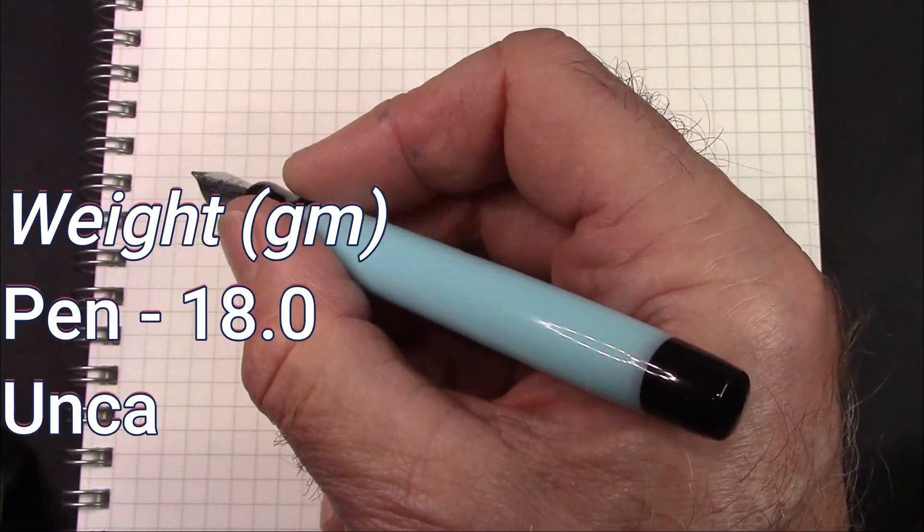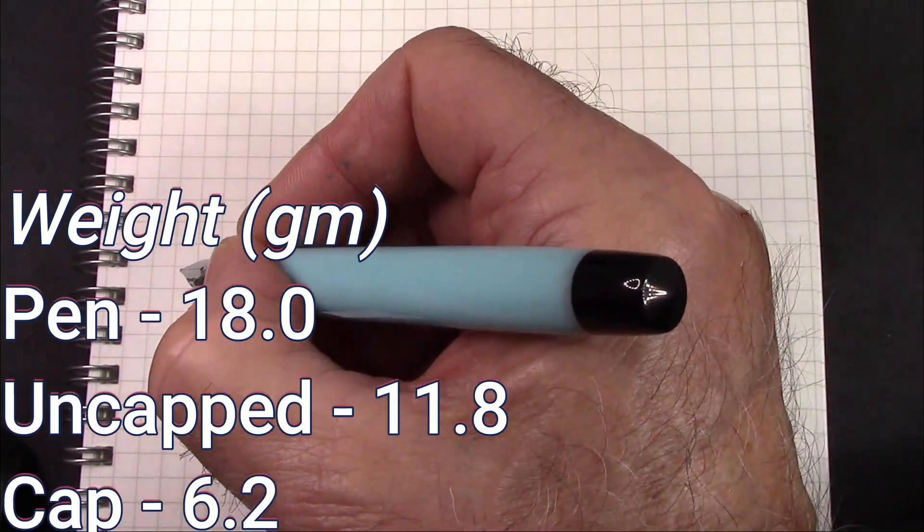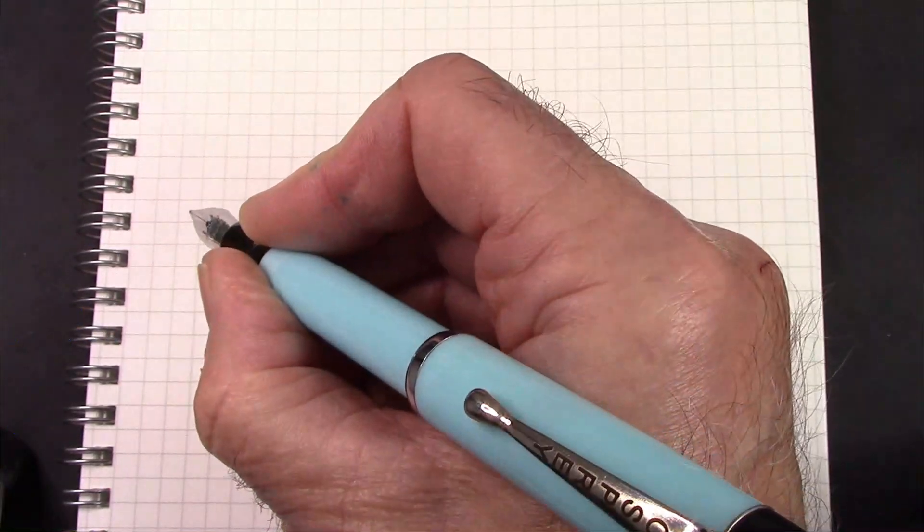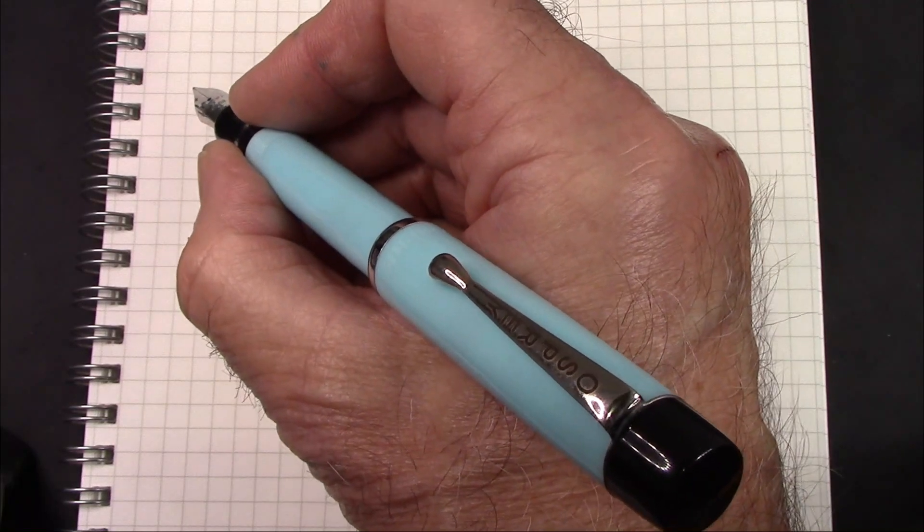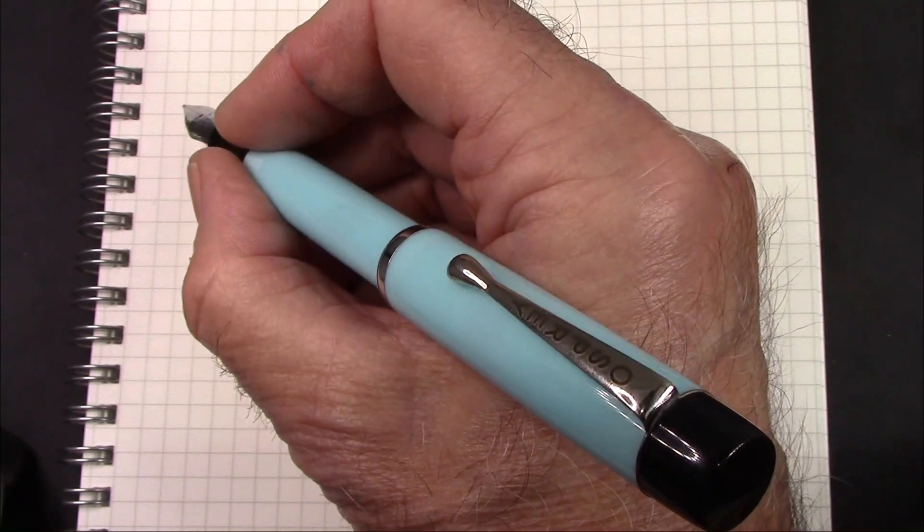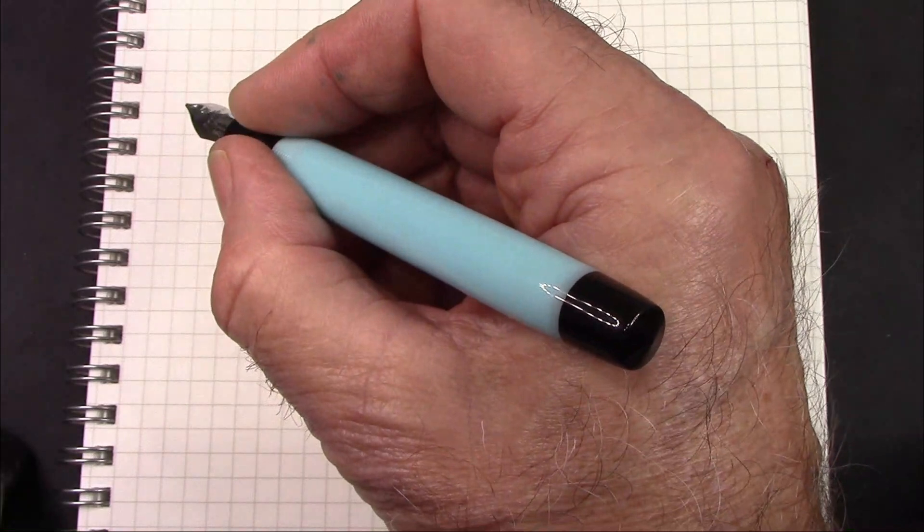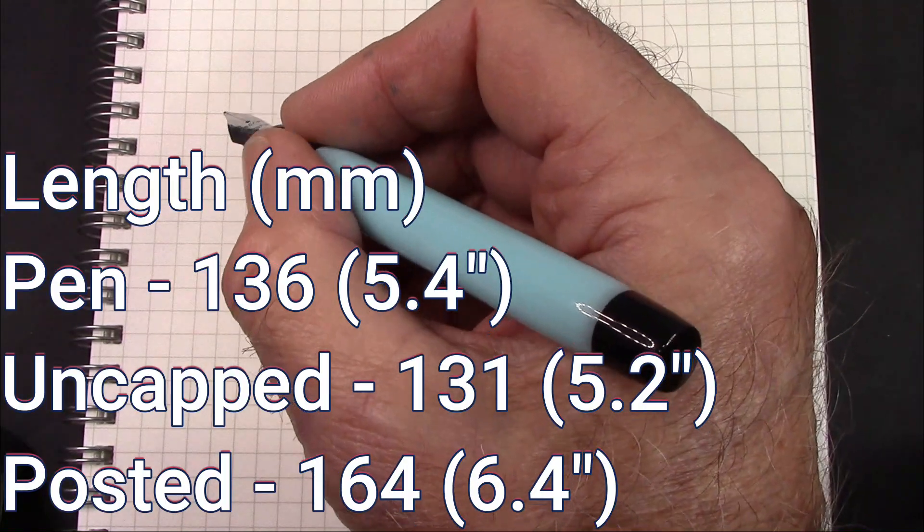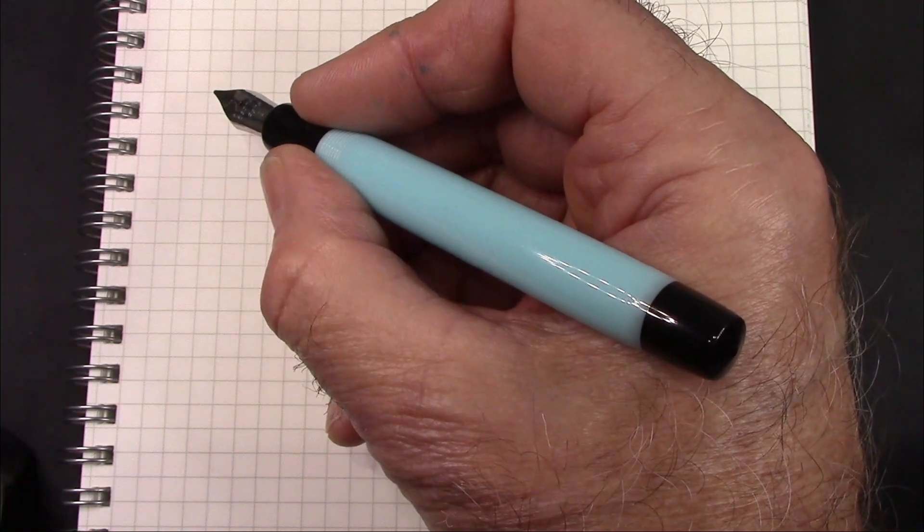I'll give you the weights of the pen. It is on the light side. And it does post fine. Like I said, I would prefer writing with this posted, probably because of that extra added weight of the cap. But when I'm writing over the camera, we're not going to post. We'll give you the lengths of the pen to put things in perspective. Now let's put that nib on the paper.